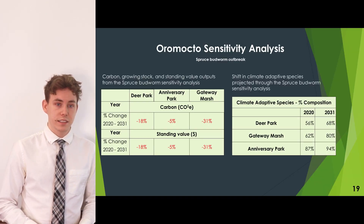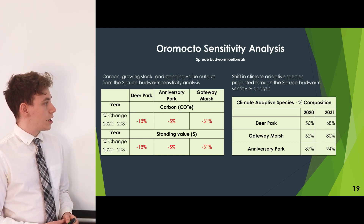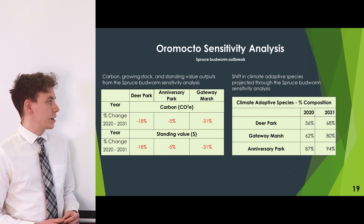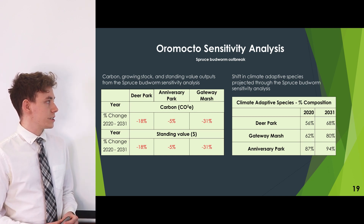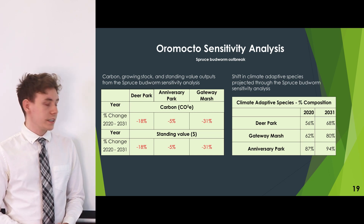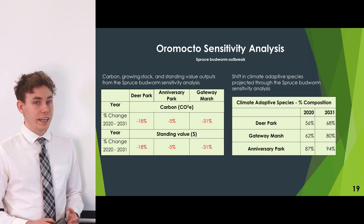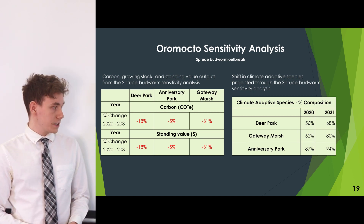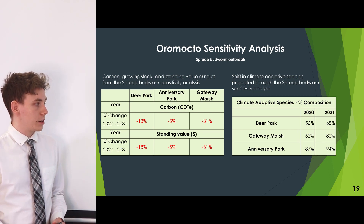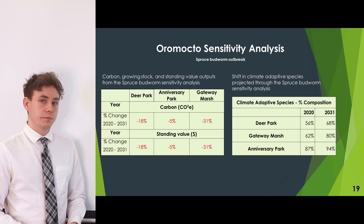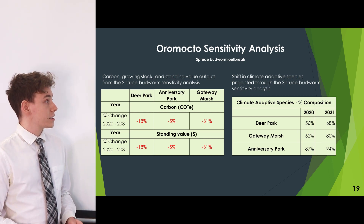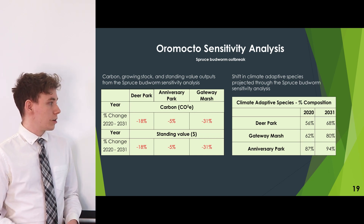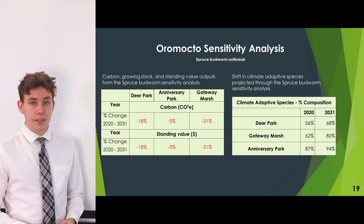Under the sensitivity analysis on our recommended Scenario 1, if an outbreak occurred in 2021, we would see a negative 18% decrease in carbon and standing value for Deer Park, negative 5% for Anniversary Park, and negative 31% for Gateway Marsh. As for climate-adaptive species composition, this would shift favorably: Deer Park from 56% to 68%, Gateway Marsh from 62% to 80%, and Anniversary Park from 87% to 94%, because balsam fir is not a climate-adaptive species, so its decline would benefit species composition, though it would negatively affect all other objective indicators.